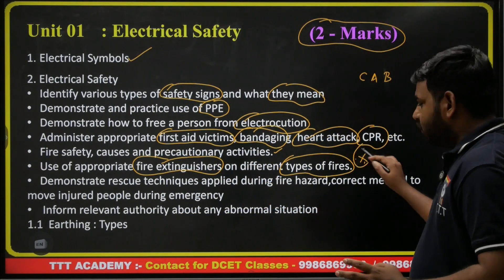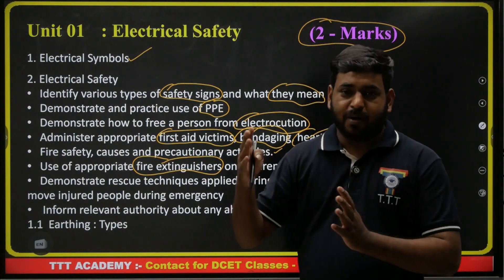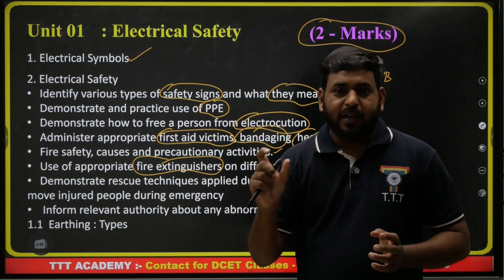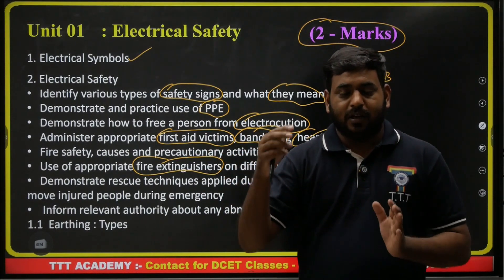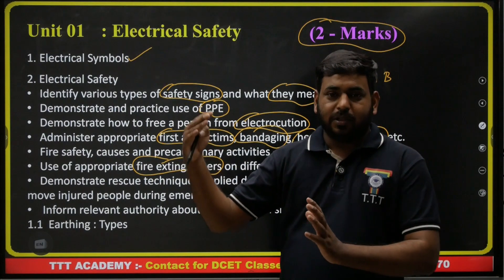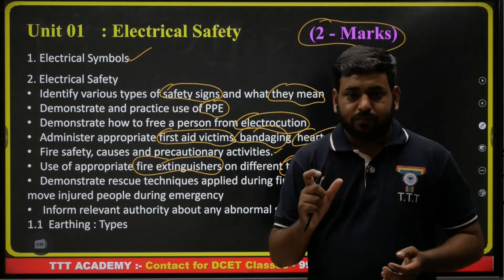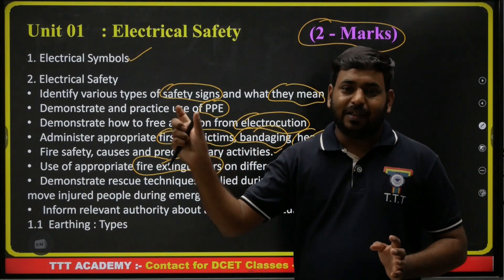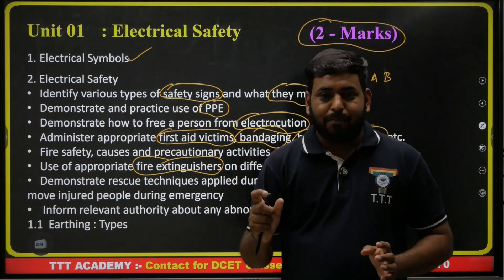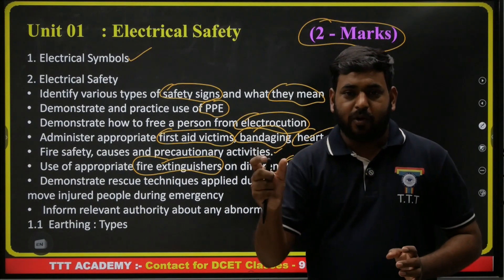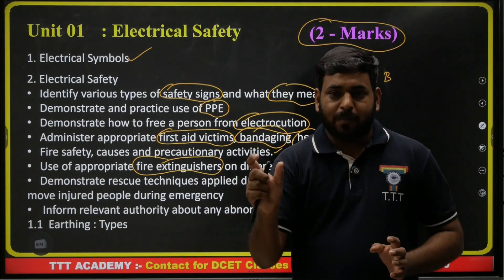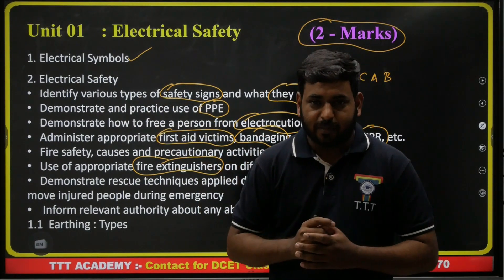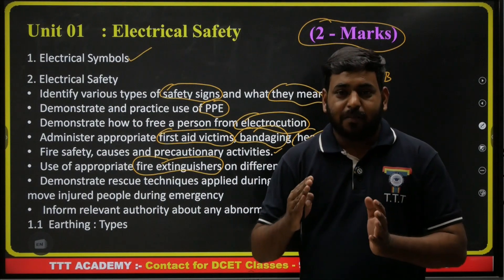Fire extinguishers are differentiated by color. Water extinguisher: red. CO2 extinguisher (for electrical fires): black. Foam extinguisher: cream color. DCP — Dry Chemical Powder: blue. WCP — Wet Chemical Powder: yellow. These colors help identify the correct extinguisher type.